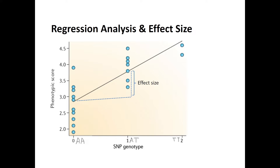In GWAS analysis, what typically happens is just a regression analysis. With data that is continuous, a linear regression is done at each locus. For instance, at a particular locus, we may have two alleles, A and T.